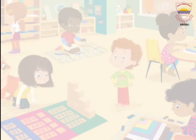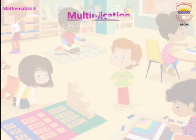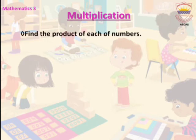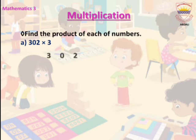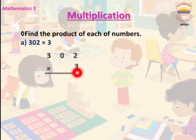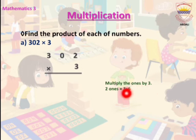Now let's solve our second example. Find the product: 302 multiplied by 3. Here 302 is the multiplicand and 3 is the multiplier. First, we multiply the 1's place by 3.